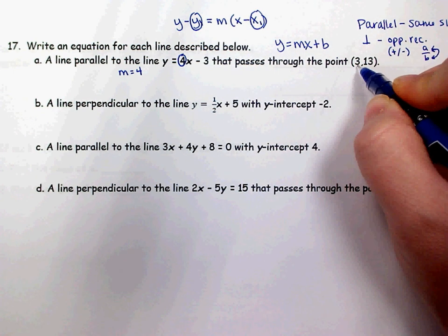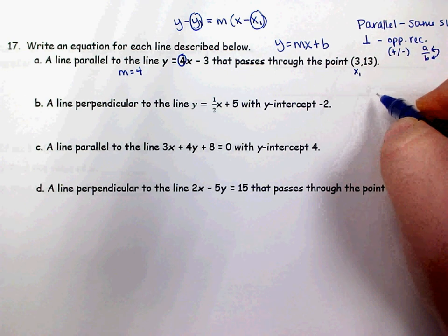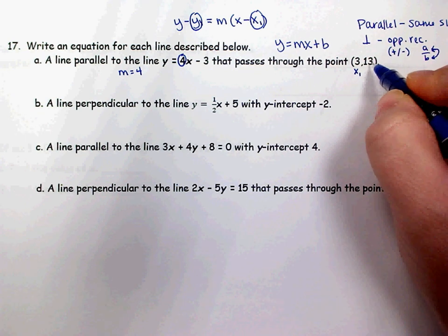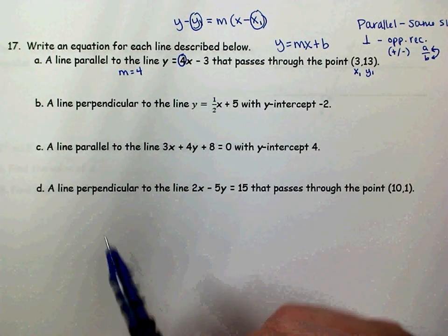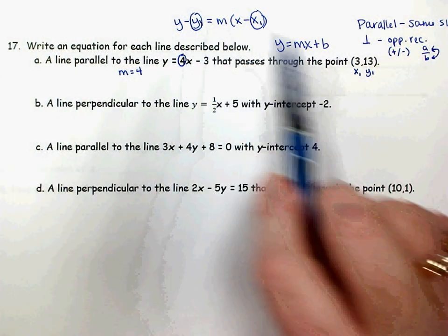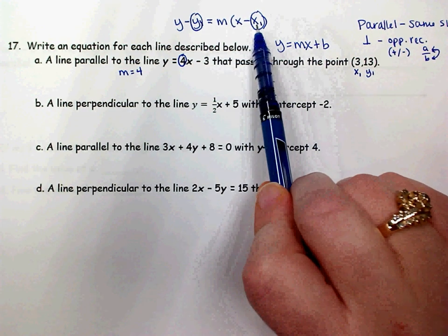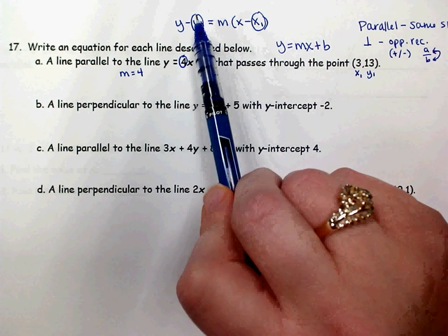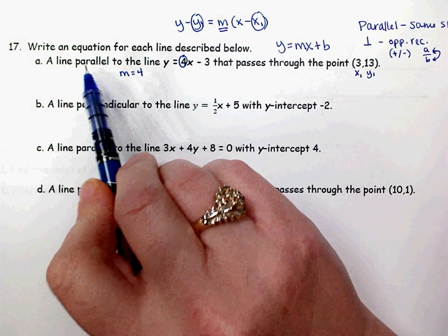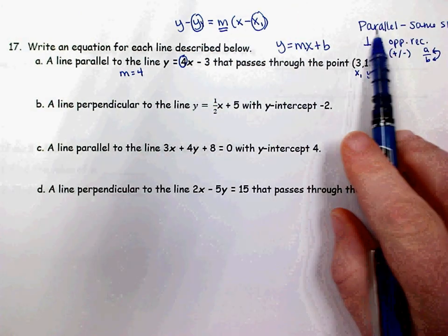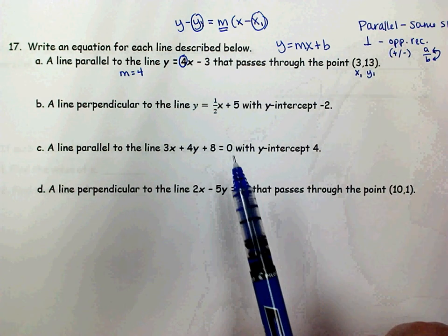The y-sub-1 and x-sub-1 are where you put your given point. The first number is an x-coordinate, so it goes in for x-sub-1, and the second number is your y-coordinate, so it goes in the y-sub-1 place. Don't try to replace them in order — you have to put the x in for x and the y in for y. For m, pay attention to whether you have parallel, which is same slope, or perpendicular, which is opposite reciprocal.